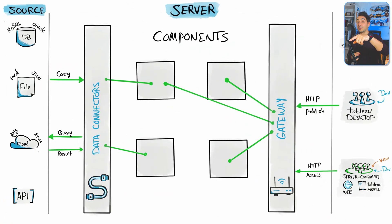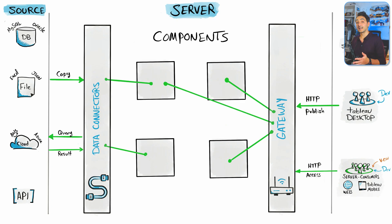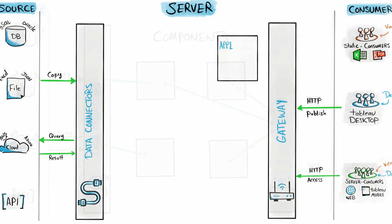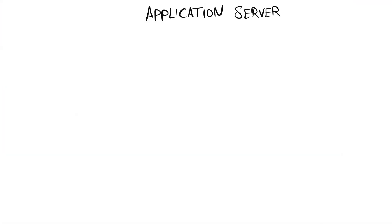In Tableau Server there are different kinds of components — we have servers, engines, and storages. We'll start with the servers. In Tableau Server there are different processes: login, publish, accessing a workbook, and so on. Tableau Server has designed different servers for different processes. Let's start with the Application Server.